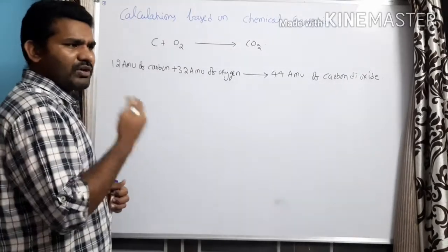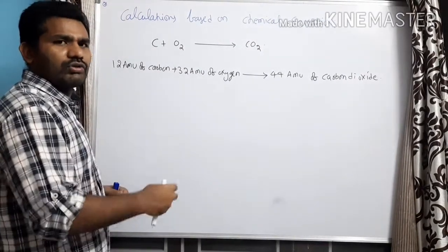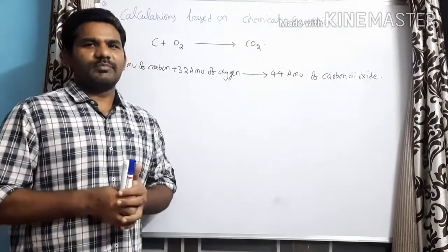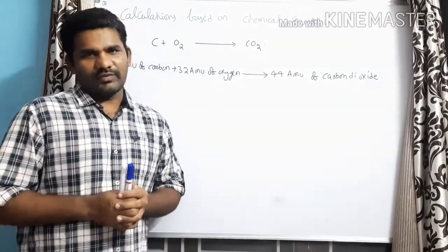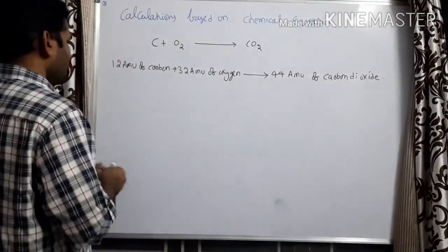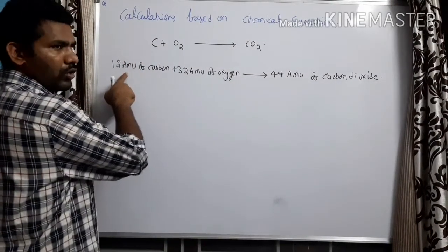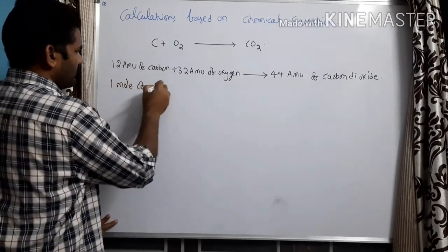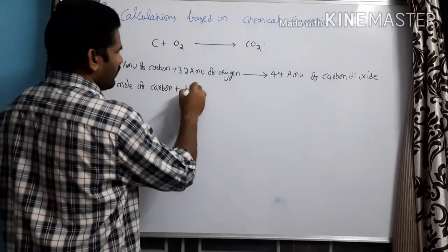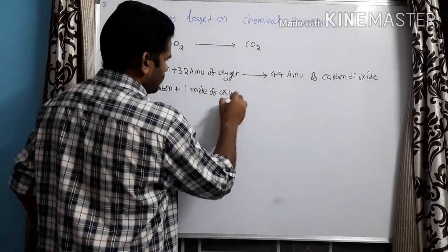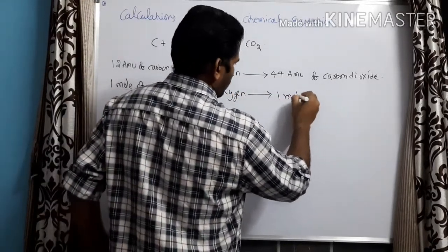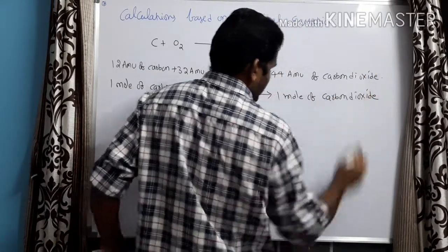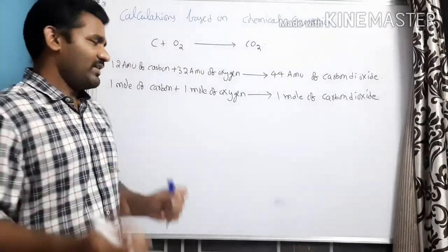We already know that the atomic weight of an element or molecular weight of a compound is equal to its mole. I will share the link of the mole concept video in the description — please go and watch it. So 12 atomic mass units is nothing but one mole. I can rewrite the equation as: one mole of carbon reacts with one mole of oxygen to form one mole of carbon dioxide.